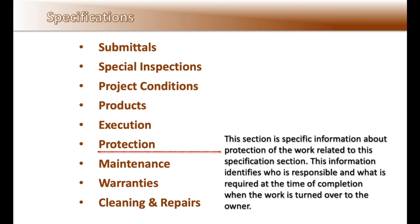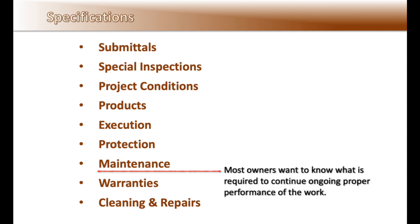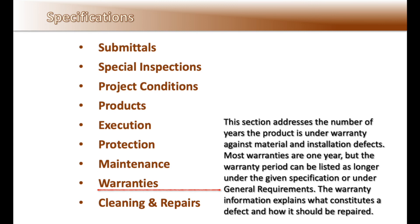It is very important to understand and qualify these protection requirements in your proposal. In reference to maintenance, most owners want to know what is required for continued proper ongoing performance of the installed work, and may require you to prepare a maintenance manual to be submitted when the project is turned over to the owner. The warranties section addresses the number of years a product is under warranty against material and installation defects. Most warranties are one year, but the warranty period can be listed as longer under a given specification or under general requirements.